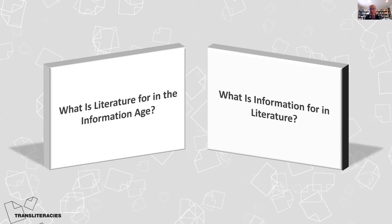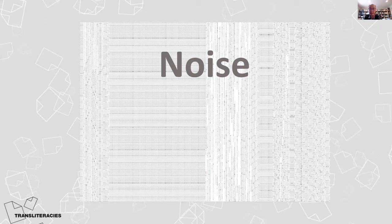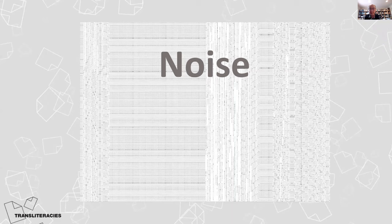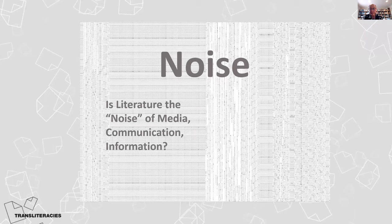I think the answer — or if answer is too strong a word, then possibility, hypothesis — is noise. The historian's great topic is the crowd, the mass, the mob. The literary equivalent of that, connected with the notion of the mass and the mob, is noise — a leitmotif we have been following throughout our course since at least the time of Claude Shannon and Warren Weaver. To put it in question form: is literature the noise of media communication information? Are media communication and information the noise of literature?